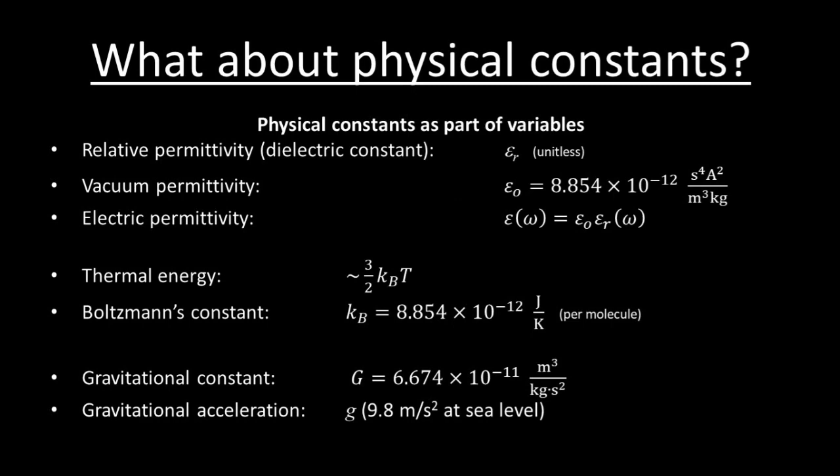What about fundamental constants, like Boltzmann's constant? Those have units, and they appear in equations, but they're not variables. Sometimes you do need to sneak in fundamental constants, often as part of other variables. For example, relative permittivity, or dielectric constant, of a material is a unitless number, but the proper variable to include is the electric permittivity of the material, which is equal to the dielectric constant times the vacuum permittivity. You may have to choose as a variable not temperature, but a measure of thermal energy, Boltzmann's constant times temperature. The gravitational constant is not a variable, but gravitational acceleration g might vary from its average earthbound value of 9.8 meters per second squared to something else in space, or even on different parts of Earth's surface.